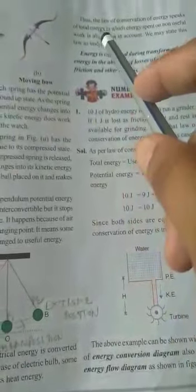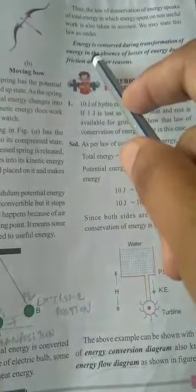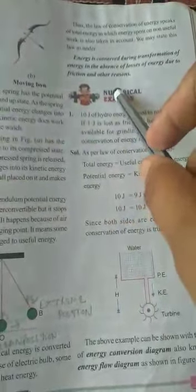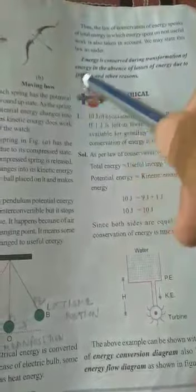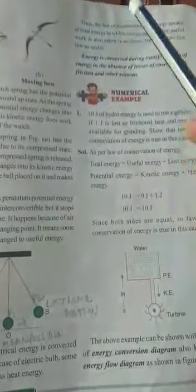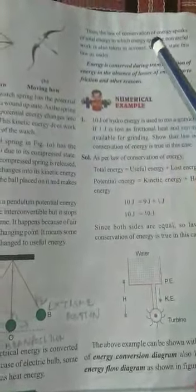Means we cannot create the energy as well as not destroy them. But energy can change only its form, from one form to another form. Means total energy is conserved during the transformation process.